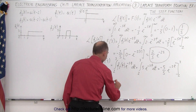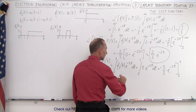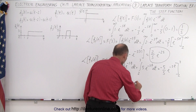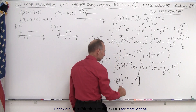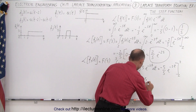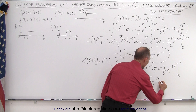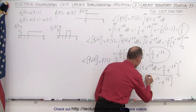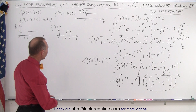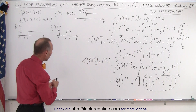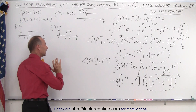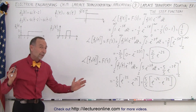Unlike before, the upper limit is not infinity, so it doesn't go to zero. Plugging in the upper limit gives e to the minus 3s; plugging in the lower limit gives e to the minus 2s. Reversing the order and eliminating the negative sign, we get five over s times (e to the minus 2s minus e to the minus 3s). This is the Laplace transform of a truncated step function, or a single pulse. Later we'll see how to find the Laplace transform of multiple pulses and a whole train of pulses.